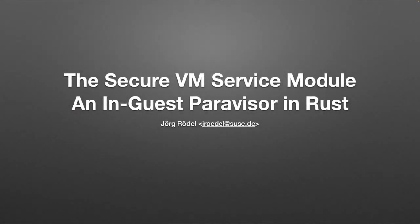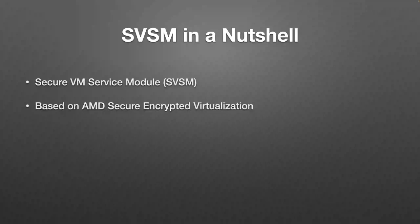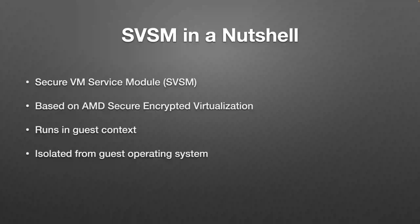Welcome to this talk about the Secure VM Service Module (SVSM) and in-guest paravisor in Rust. SVSM is software which runs under AMD virtualization, specifically under AMD Secure Encrypted Virtualization (SEV). It runs in guest context but is isolated from the guest operating system — the guest OS cannot interfere with the memory or execution of the SVSM.